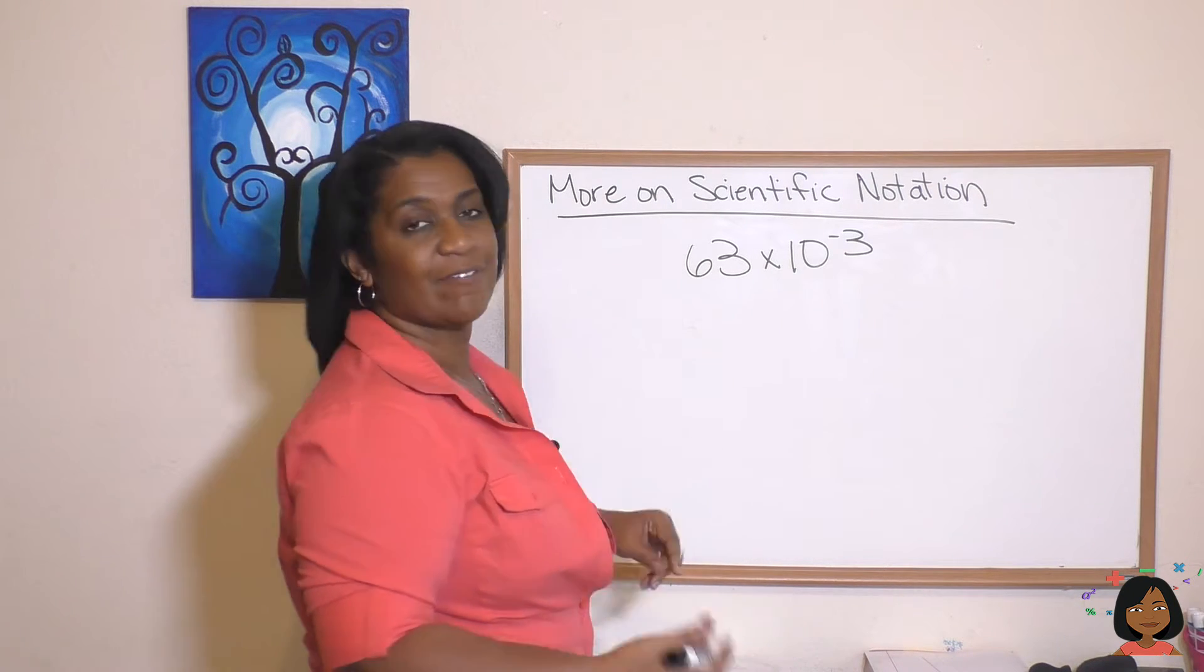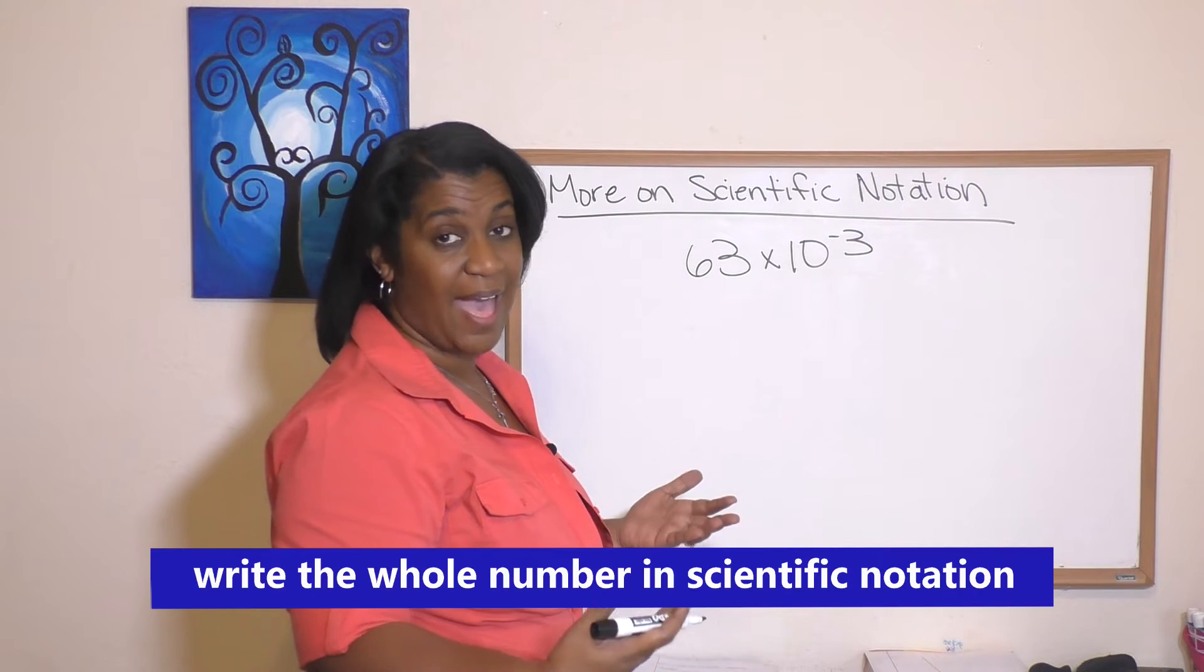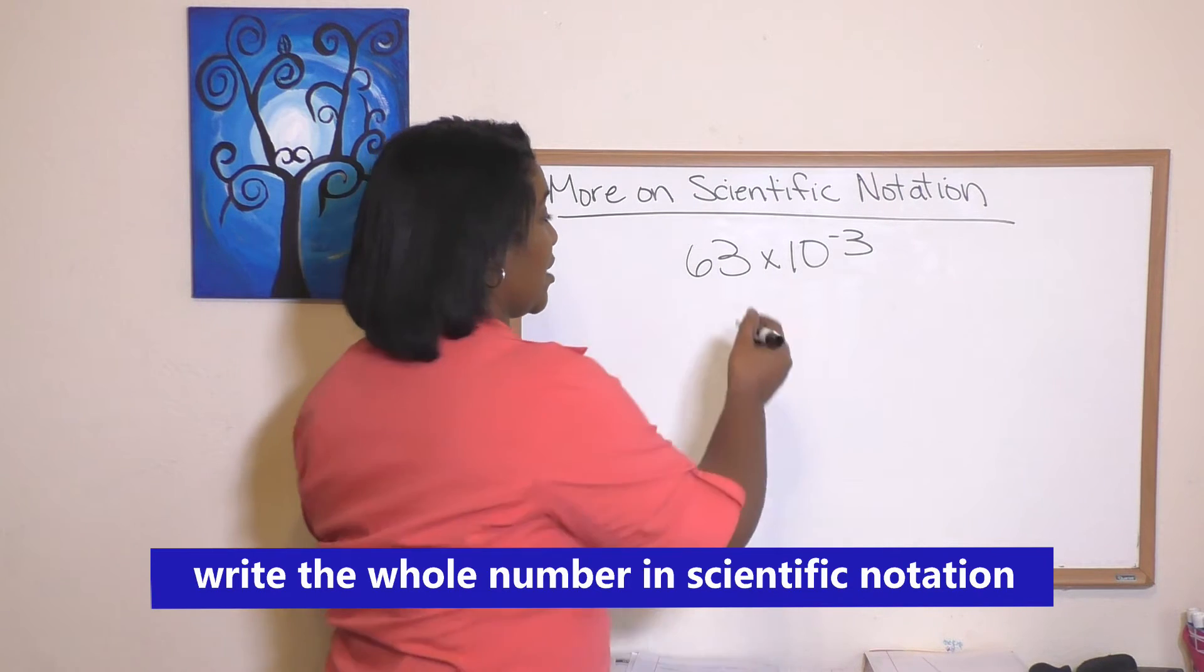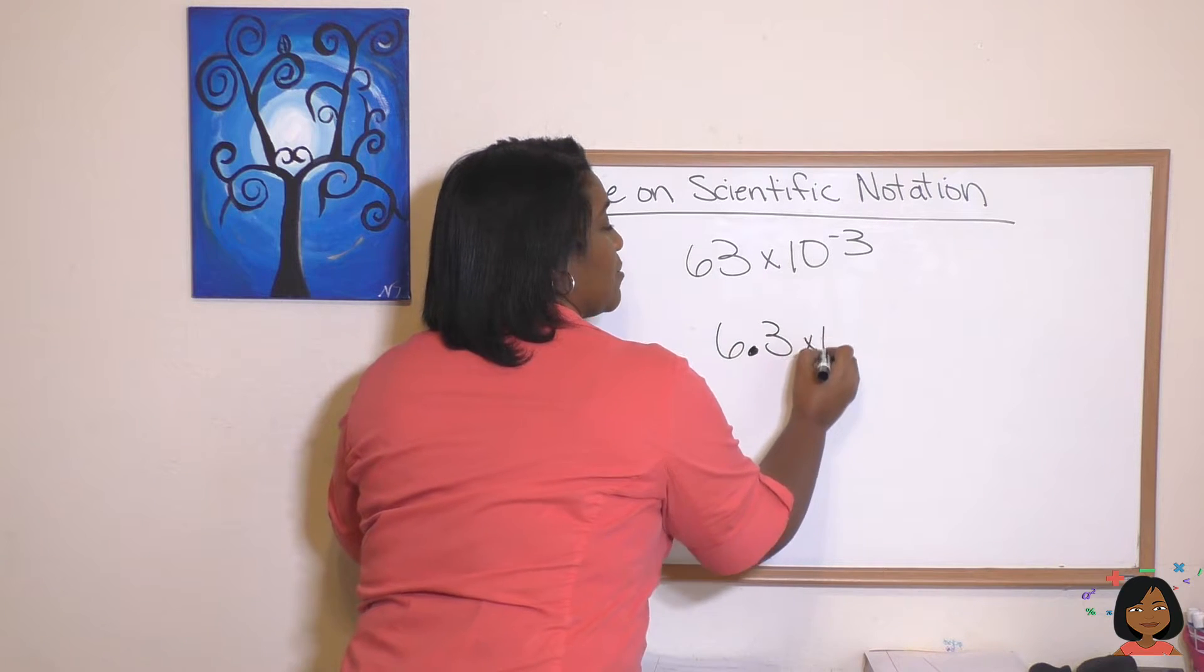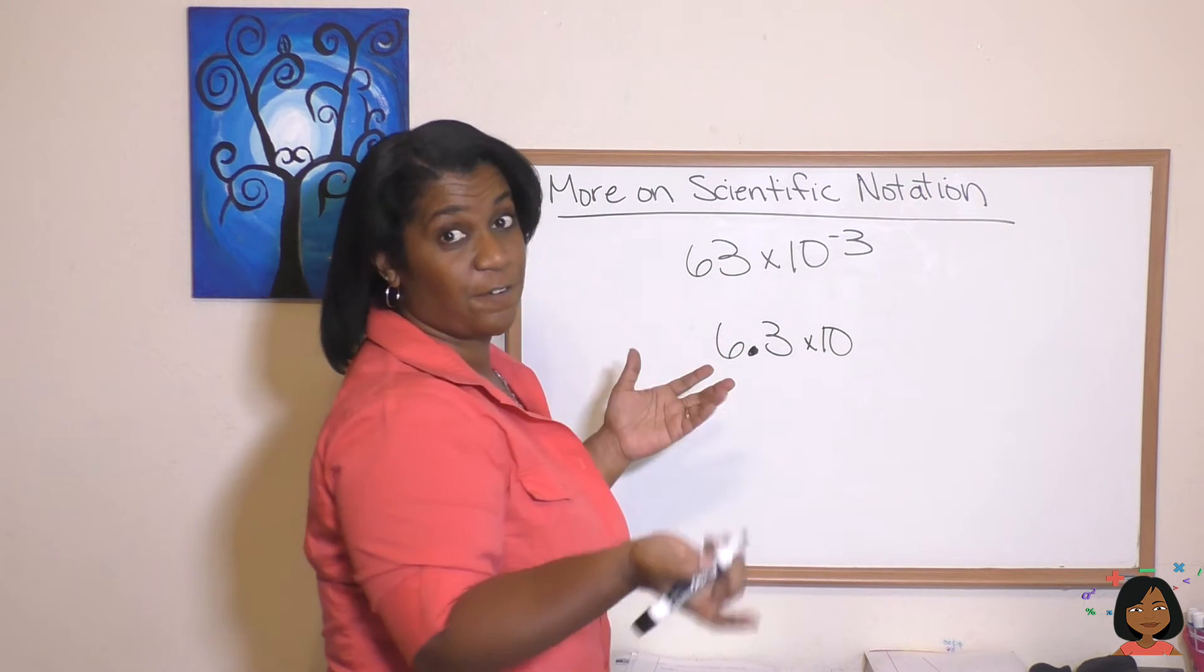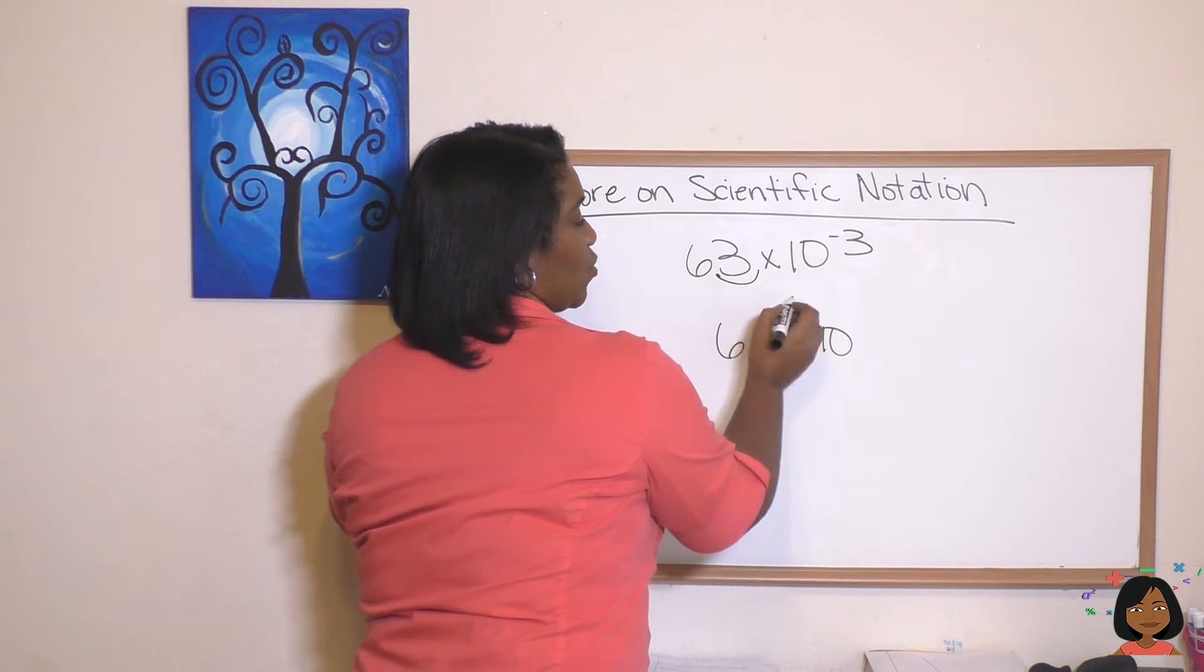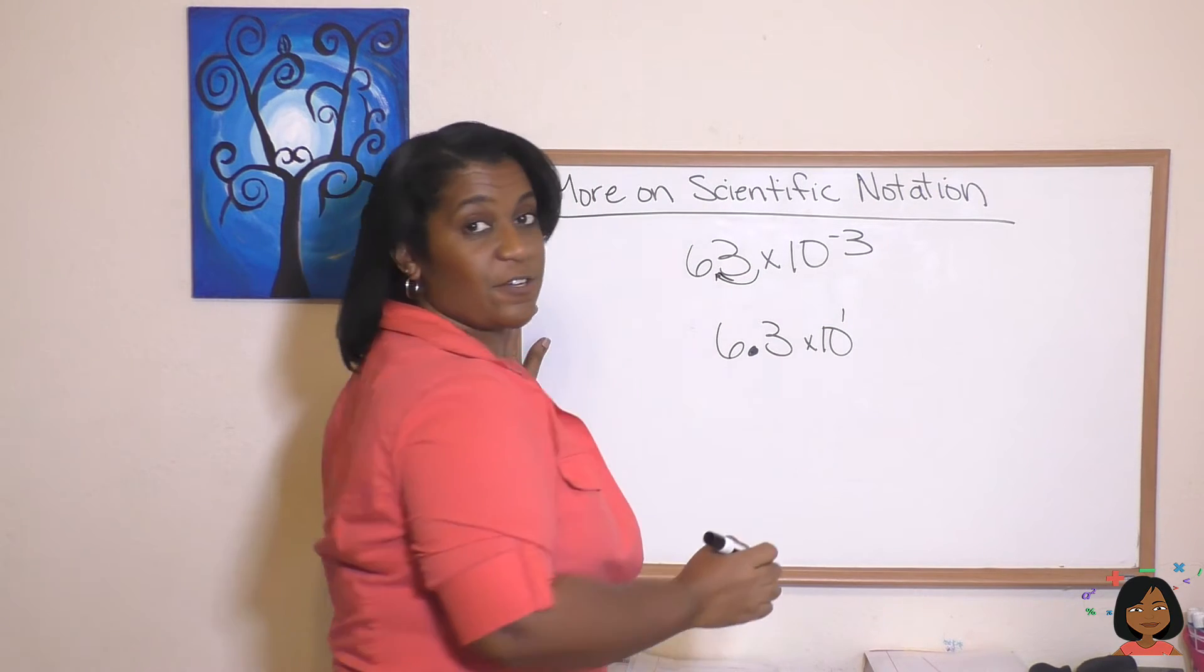We have 63. Let's turn that into its scientific notation. We know it's going to be 6.3 times ten to the first power. We're going to move that decimal just one place—ten to the first power—times ten to the negative third power.